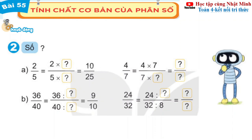Bài 2 câu A: 2 phần 5 bằng 2 nhân 5 trên 5 nhân 5 bằng 10 phần 25. Tiếp theo 4 phần 7 bằng 4 nhân 7 trên 7 nhân 7 bằng 28 phần 49. Câu B: 36 phần 40 bằng 36 chia cho 4 trên 40 chia cho 4 bằng 9 phần 10. Tiếp theo 24 phần 32: 24 chia cho 8 trên 32 chia cho 8 bằng 3 phần 4.